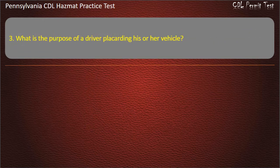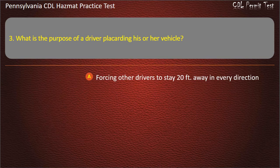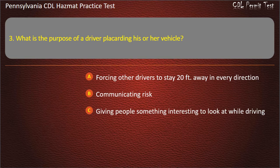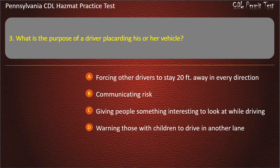Question 3. What is the purpose of a driver placarding his or her vehicle? Options: Forcing other drivers to stay 20 feet away in every direction; Communicating risk; Giving people something interesting to look at while driving; Warning those with children to drive in another lane. Answer: Communicating risk.